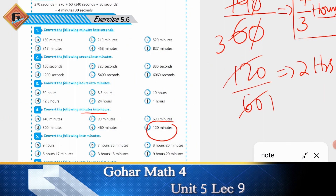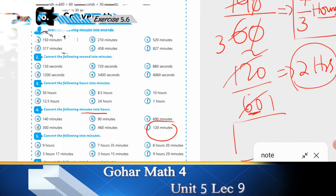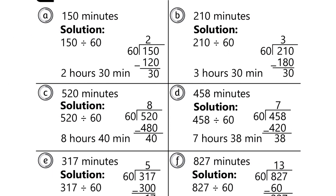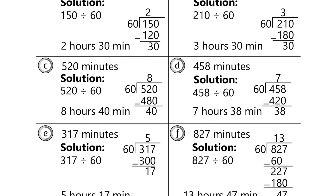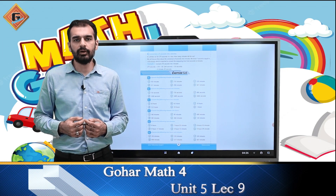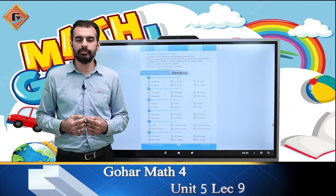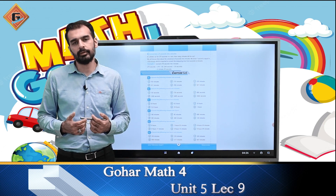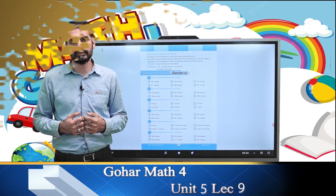बाकी answers आपने इस तरह लिखने हैं। Last वाले के answers hours और minutes में लिखने हैं — division करनी है, ऊपर hours और जो remainder आएगा वो minutes। बाकी answers आपने key से verify करने हैं और check करने हैं। उम्मीद है आपको यह topic समझ आ गया होगा। अब मिलेंगे next video में next topic के साथ। अल्लाह हाफिज।